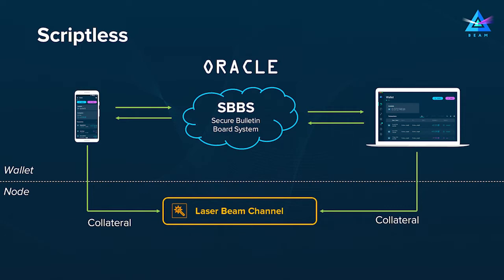In this case, the oracles are used in a less trusted fashion because these are not automatic operations — the wallets are in complete control of what contracts they close and what they trade. Once a contract is created and agreed upon, wallets create a direct payment channel between each other using Laser Beam. They lock some amount of collateral, probably in BIMs or any other confidential asset supported on the BIM platform, and this collateral is used to back the trade.